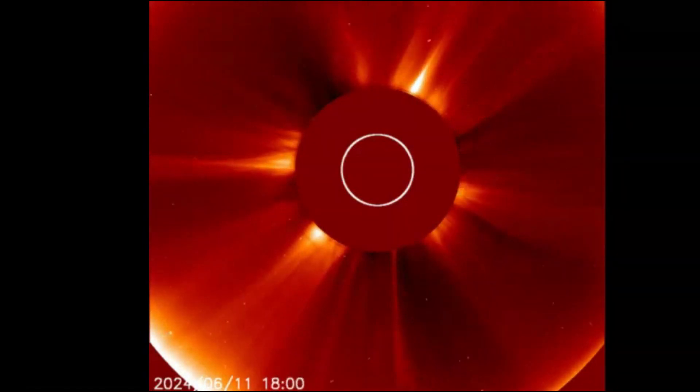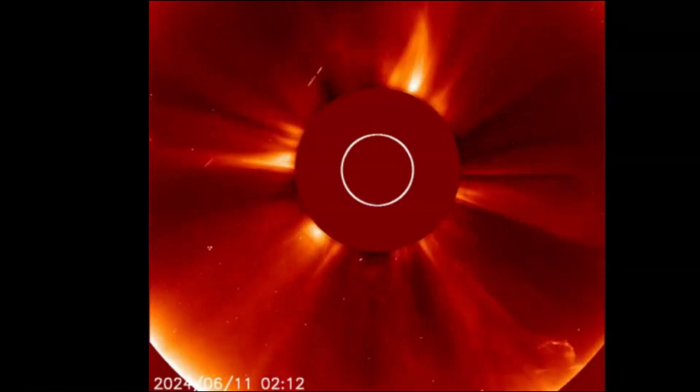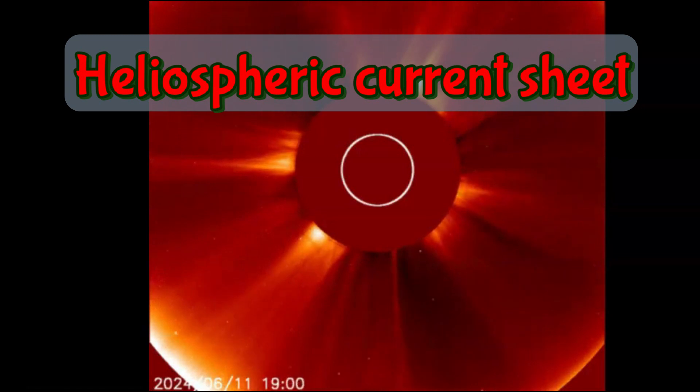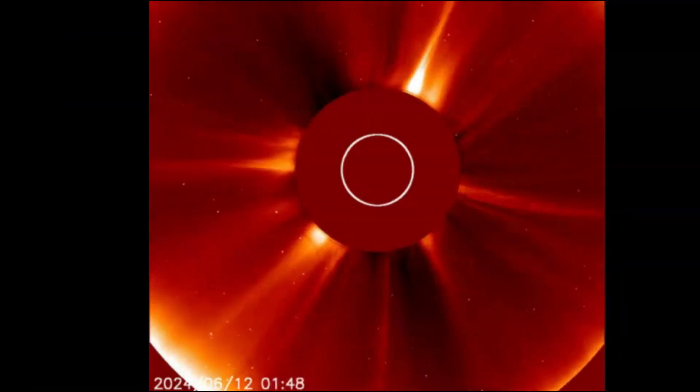So these CMEs are connected to the sunspot via what they call the Parker Spiral, which can guide energetic protons from the far side to Earth. This proton rain is on the verge of becoming an S1 class radiation storm.